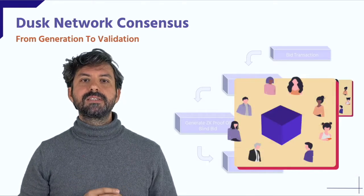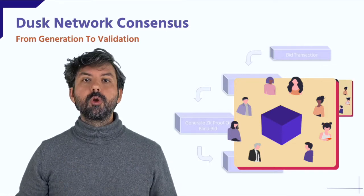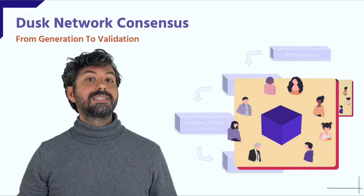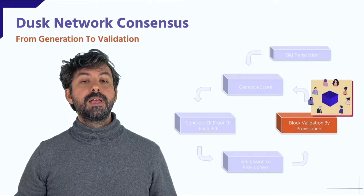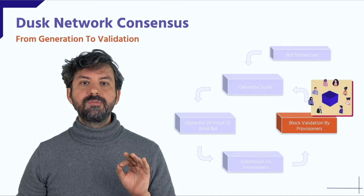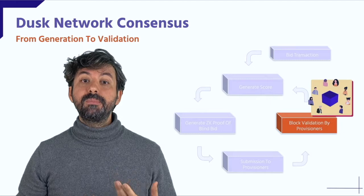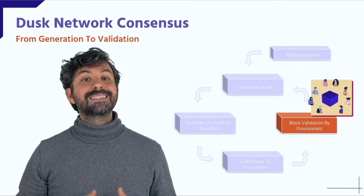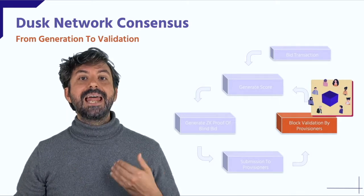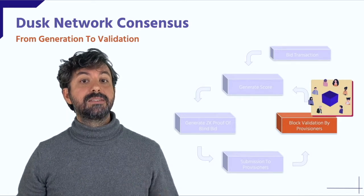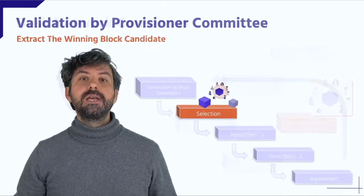During the block validation phase, different committees of validators, called provisioners, follow multiple steps in order to select the winning block to be added to the blockchain in a permanent manner. By running a non-interactive procedure called committee extraction, a node reckons if it is part of the committee or not. The extraction happens during each step of the validation, and the probability of getting extracted is linked to the amount of tasks each provisioner must take.